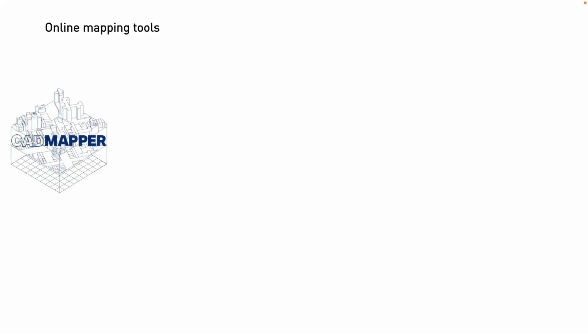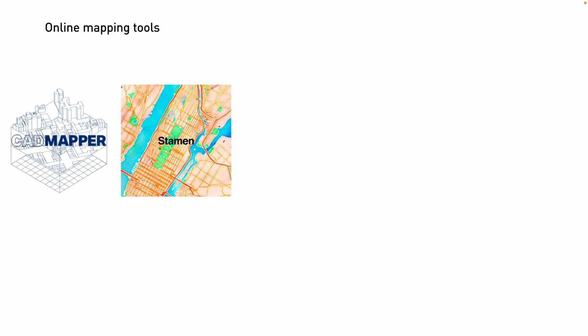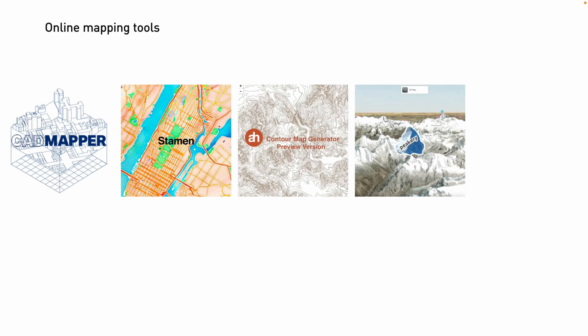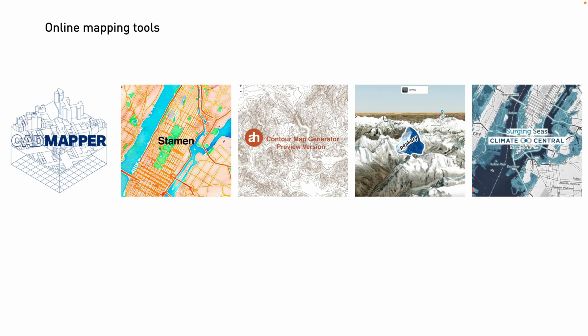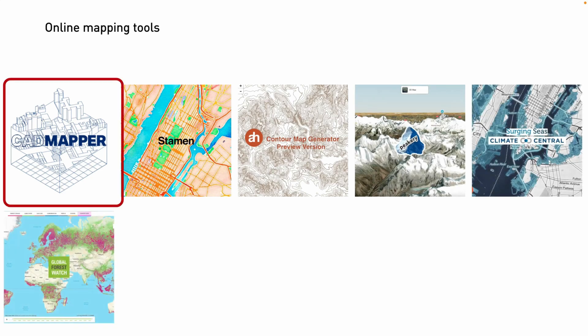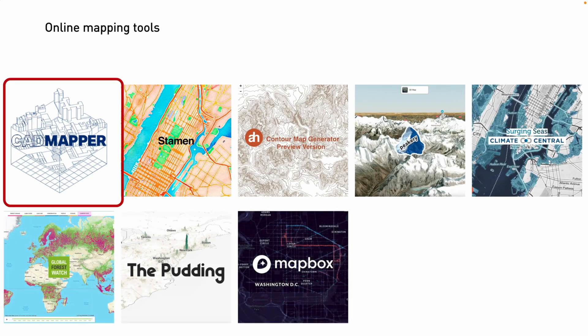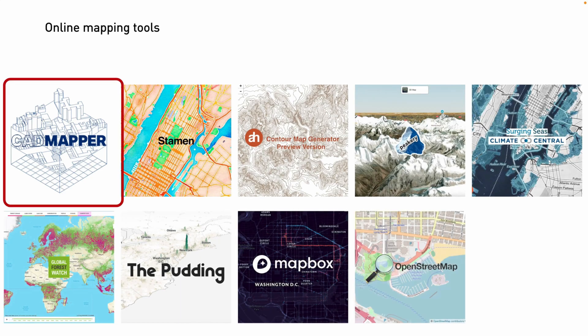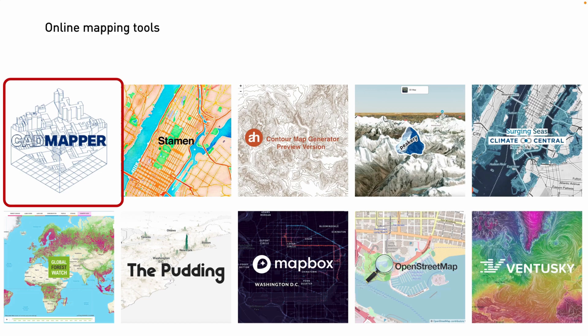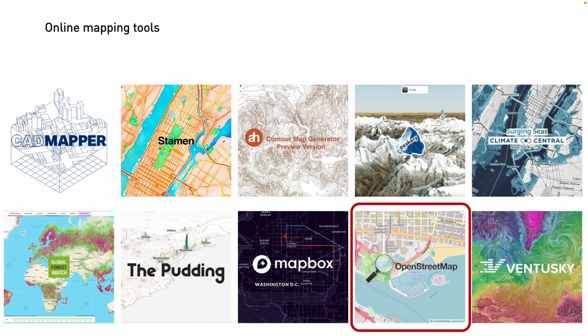Let's dive into how to extract the necessary data from various sources. Here are some of my go-to free sources for extracting data layers online. For example, CAD Mapper can extract existing buildings, landforms and roads in 3D models. OpenStreetMap is another popular open source mapping tool.